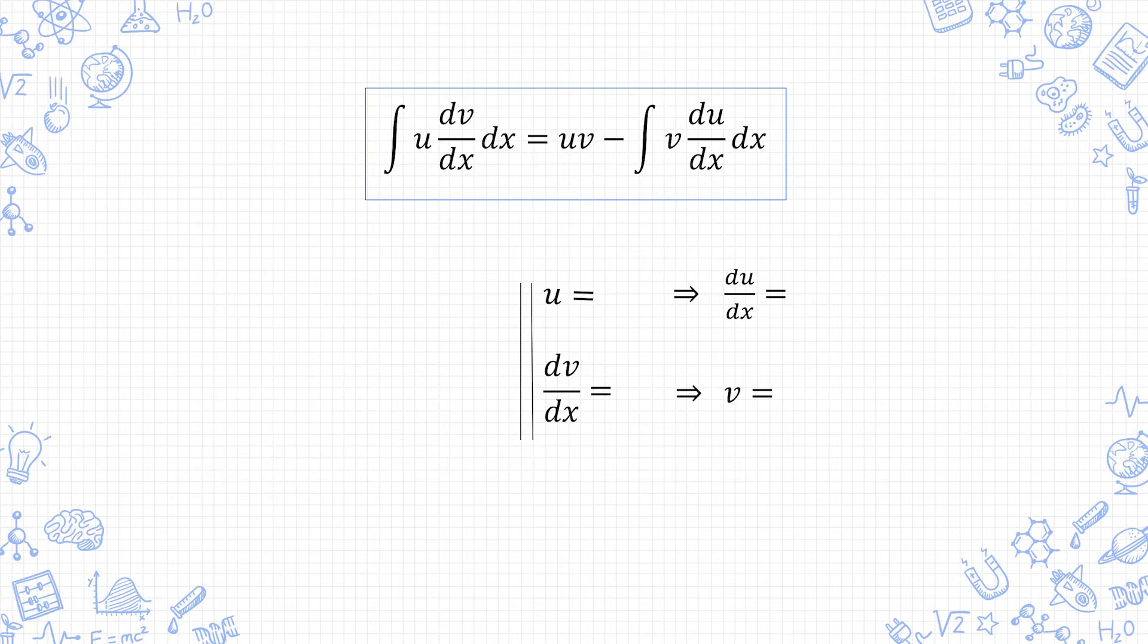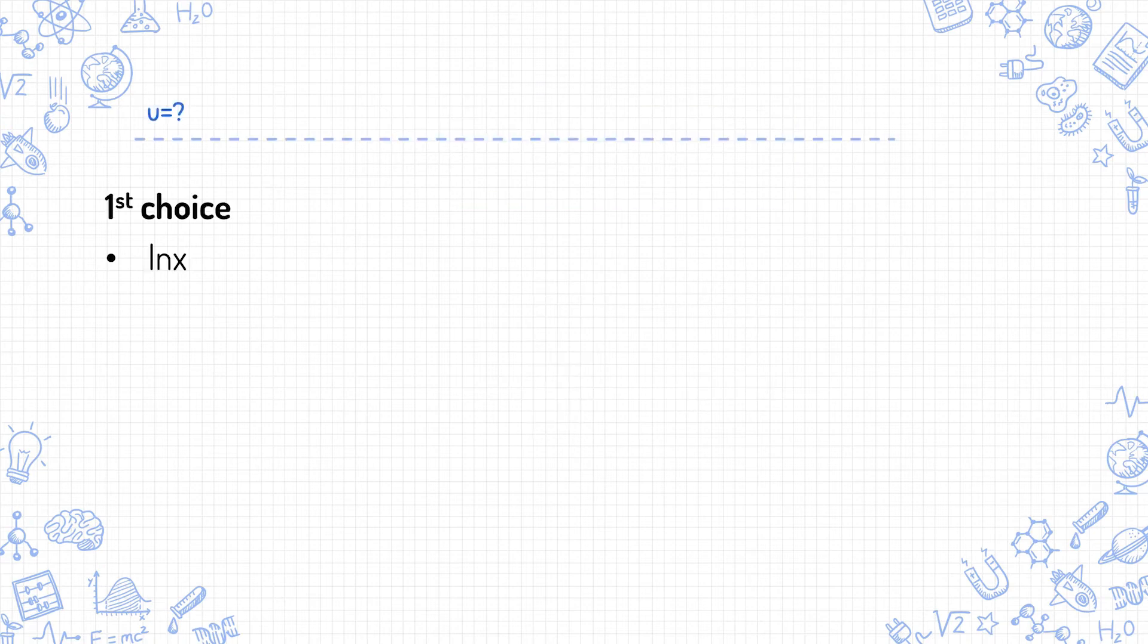So how do you choose the u and dv/dx? And for that matter, when do you use integration by parts? Generally, you choose whatever is easier to integrate as the dv/dx and whatever is harder to integrate as u. If there's a ln or inverse trig function somewhere, it's probably going to be your first choice of u because you can't integrate it directly.